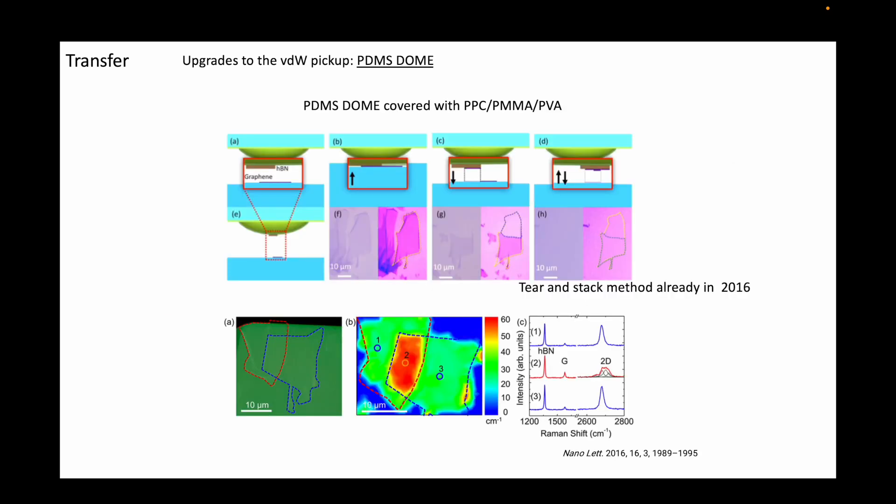Next is an upgrade to the van der Waals pickup technique, where instead of a block of PDMS, a dome-shaped PDMS is used. The geometry of the dome structure allows better control over the pickup without affecting the rest of the substrate.